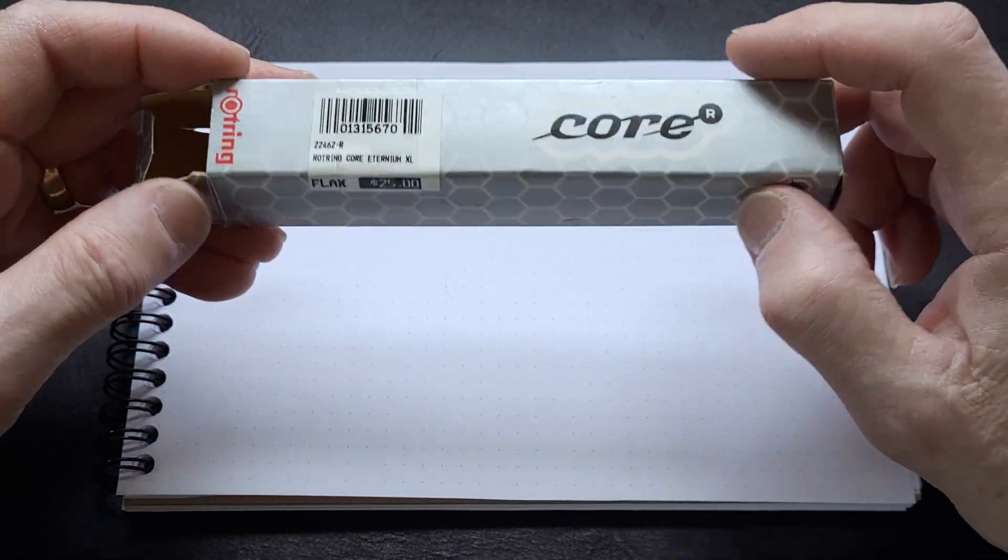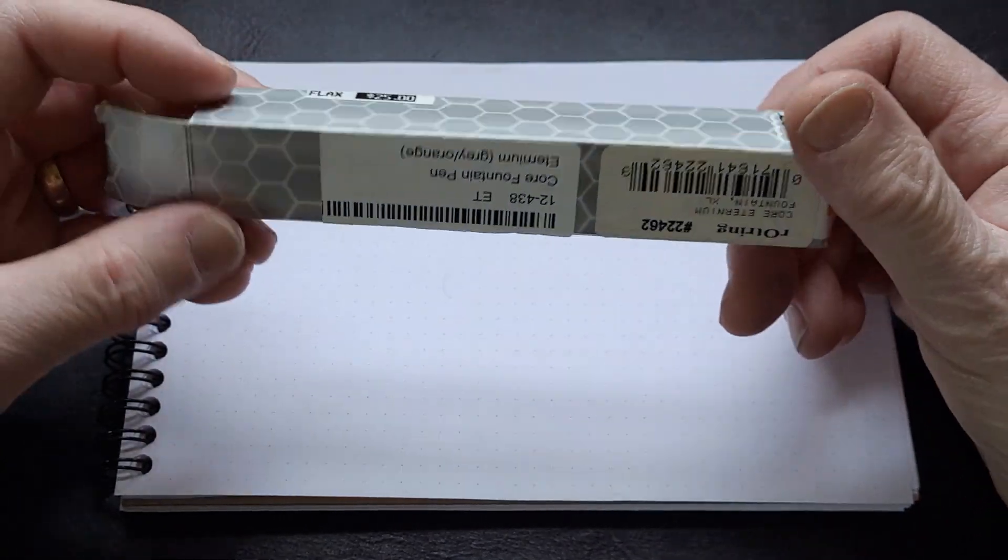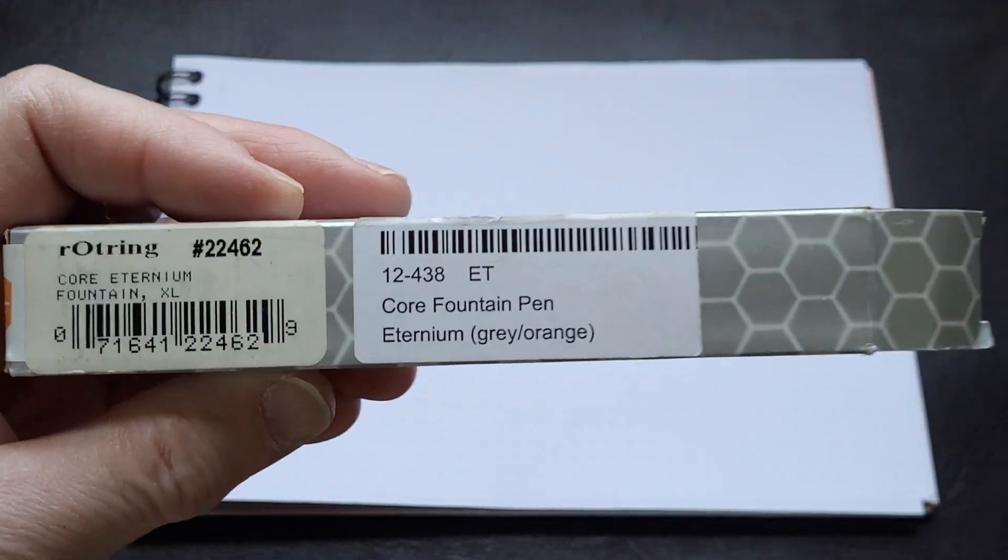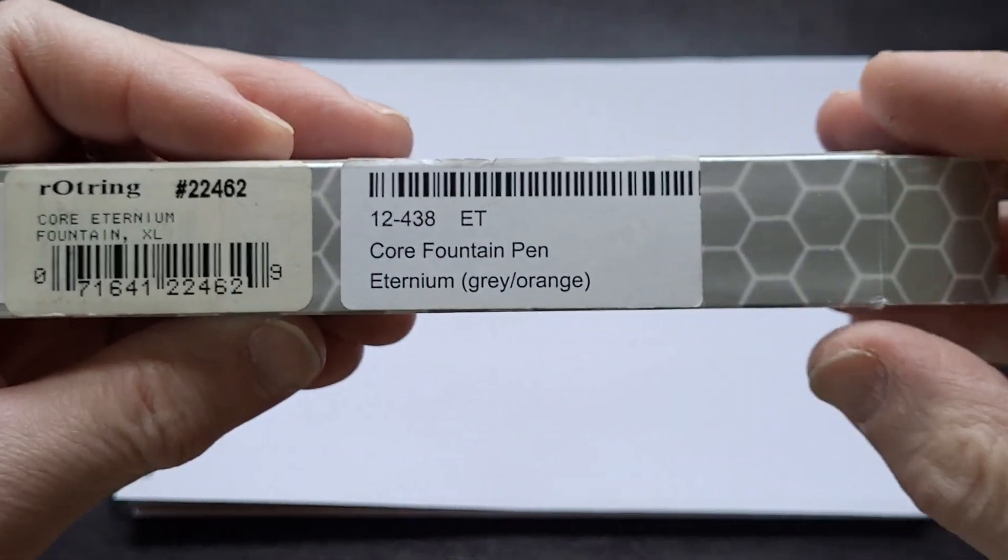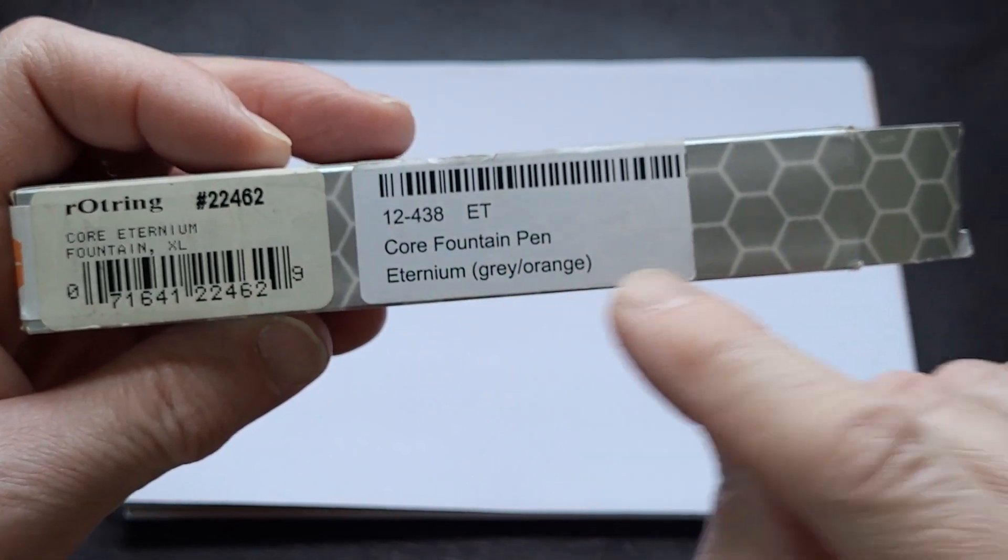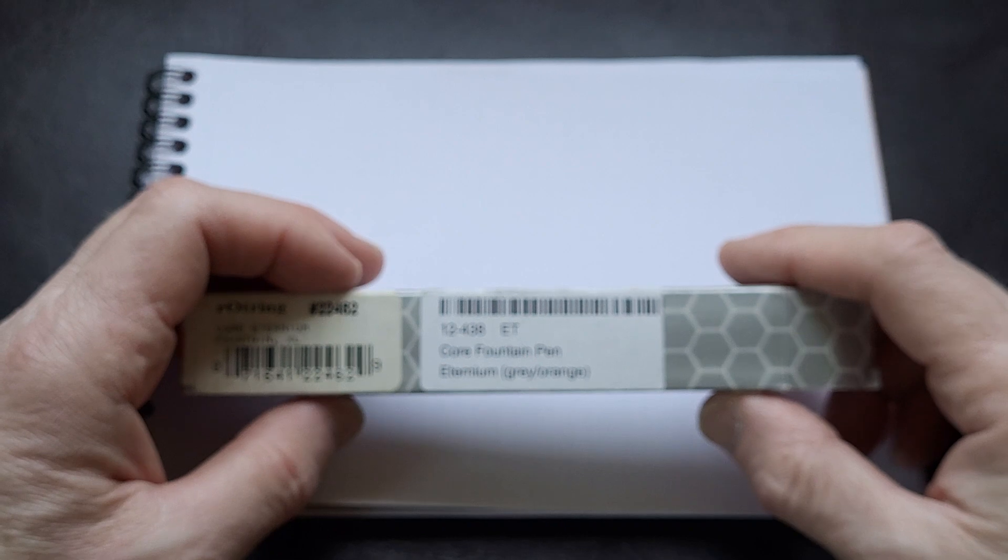I looked online. When you look at the box, it comes in a standard cardboard box, and it has on it something really interesting. It says Core Fountain Pen, E-T. I don't know what that means. Eternium, gray orange. Eternium. What's Eternium?